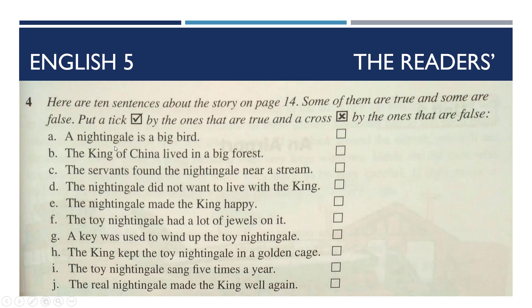First: A nightingale is a big bird — بلبل ایک بڑا پرندہ ہے — it's false, cross کریں گے۔ Next: A king of China lived in a big forest — چین کا بادشاہ ایک بڑے جنگل میں رہتا تھا — it's true, tick کریں گے۔ Next: The servants found the nightingale near a stream — نوکروں نے بلبل کو ندی کے کنارے پایا — it's true. Next: The nightingale did not want to live with the king — بلبل بادشاہ کے ساتھ نہیں رہنا چاہتا تھا — it's true, tick کریں گے۔